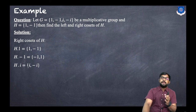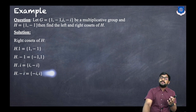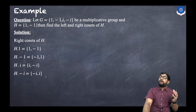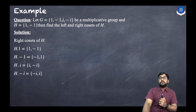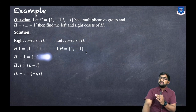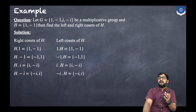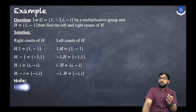Continuing with right cosets: H·i = {1·i, -1·i} = {i, -i}, and H·(-i) = {-i, i}. For left cosets: 1·H, (-1)·H, i·H, (-i)·H give the same results — {1,-1}, {-1,1}, {i,-i}, {-i,i}. So left and right cosets are the same, which means it is a commutative (abelian) group.